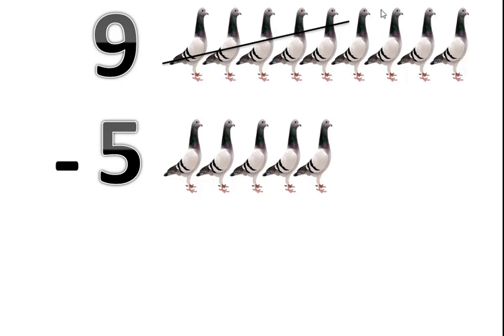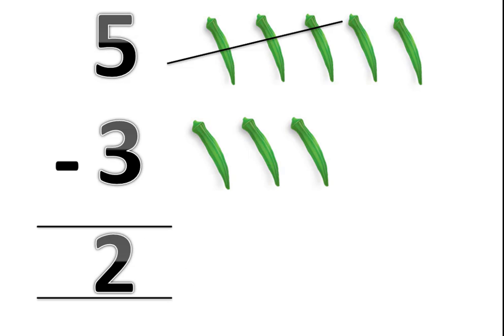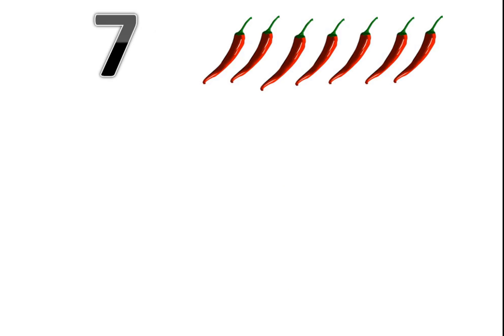Let's count: 1, 2, 3, 4. 4 pigeons are left. Let's move. 5 lady fingers minus 3 lady fingers. How many lady fingers are left? Let's count: 1, 2. 5 minus 3 equals 2. 2 lady fingers.